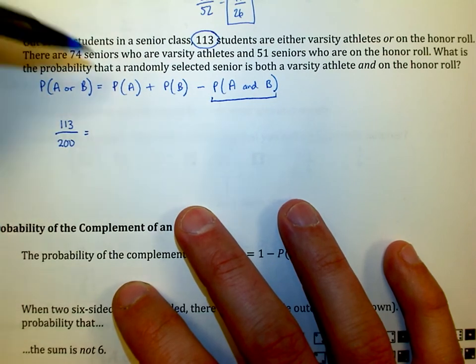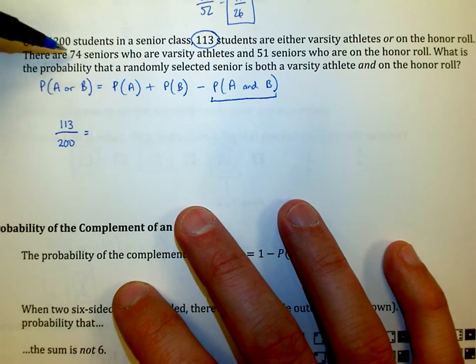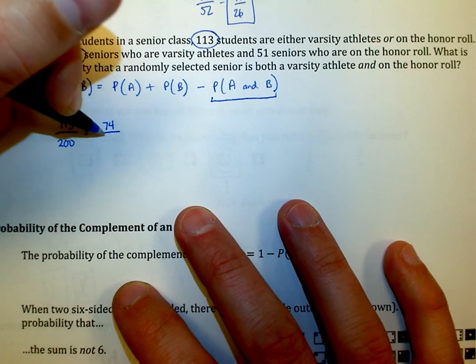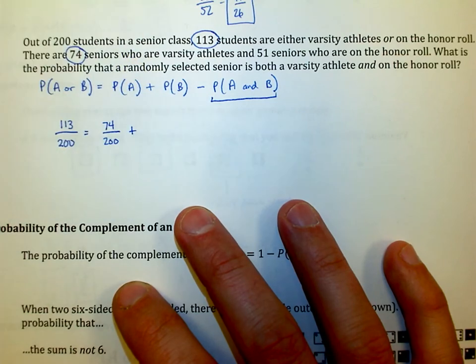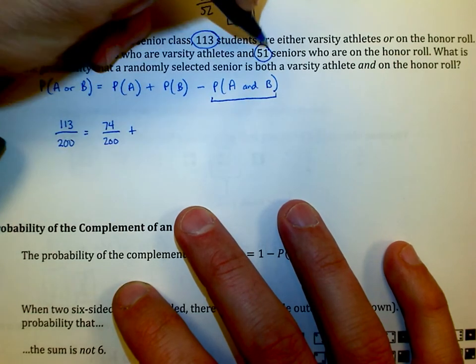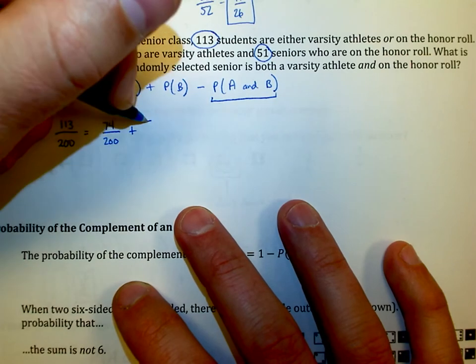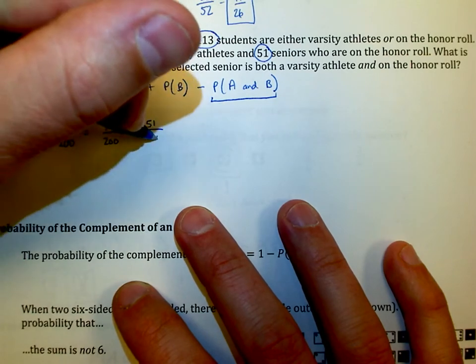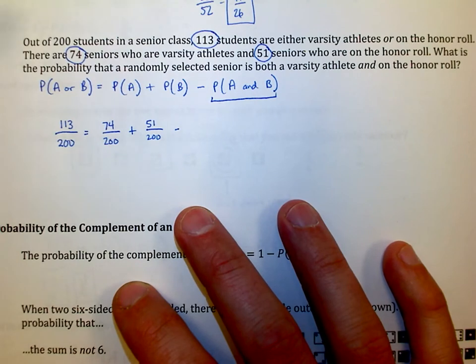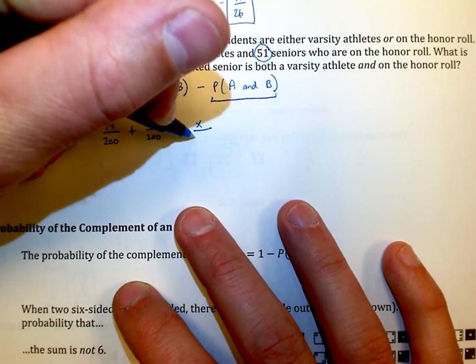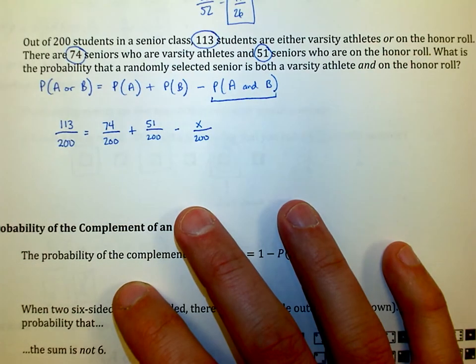What are the odds that a student is just a varsity athlete? There are 74 out of the 200 that are varsity athletes. And how many are on the honor roll? There are 51 seniors on the honor roll. The question is, what's this last piece? You could say this is x out of 200. If you say this is some number out of 200 are both, then we can easily solve for x because everything is divided by 200.